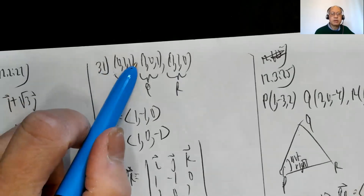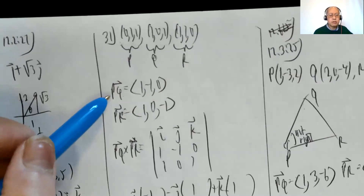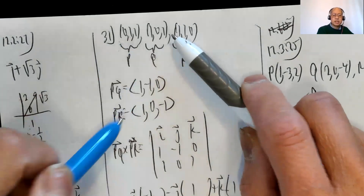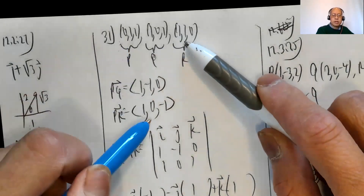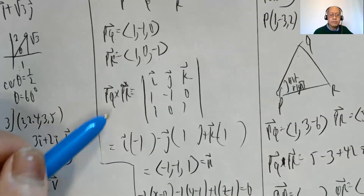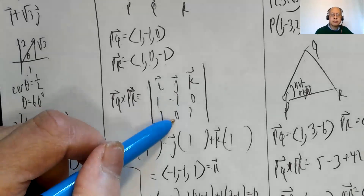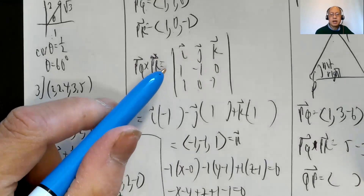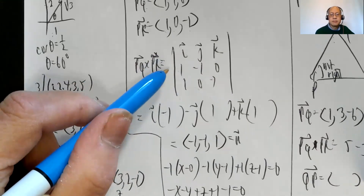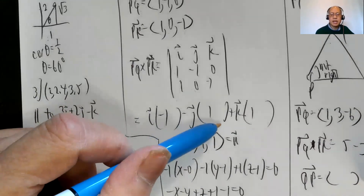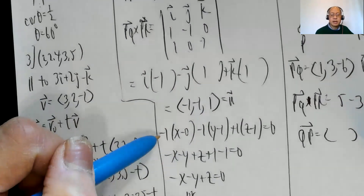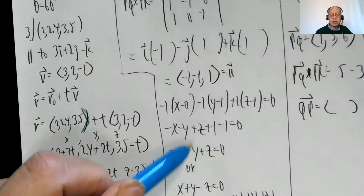Problem 12.3 number 31: given points P = (0,1,1), Q = (1,0,1), and R = (1,1,0). Vector PQ = ⟨1, −1, 0⟩ and vector PR = ⟨1, 0, −1⟩. Taking the cross product PQ × PR: i(−1−0) − j(−1−0) + k(0−(−1)) = ⟨−1, −1, 1⟩, which is the normal vector. The equation of the plane is −1(x−0) − 1(y−1) + 1(z−1) = 0, which simplifies to x + y − z = 0.